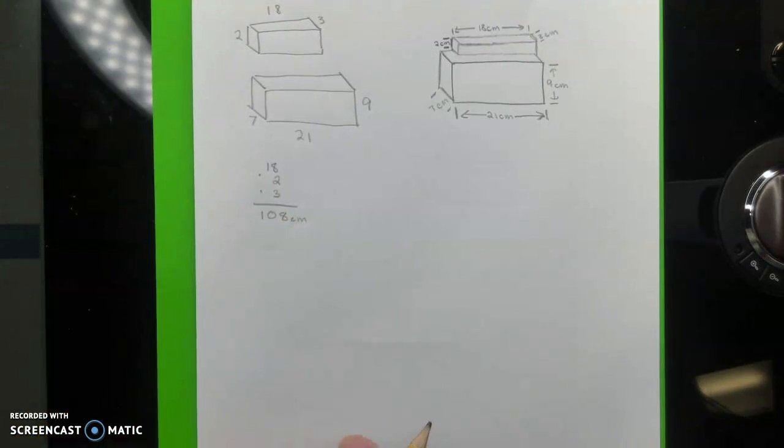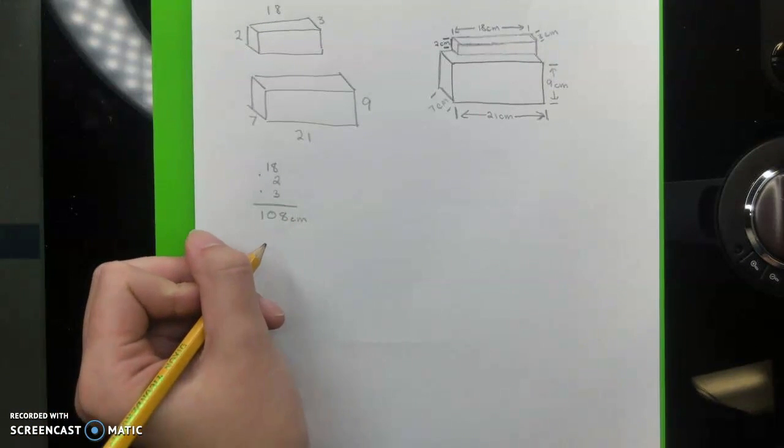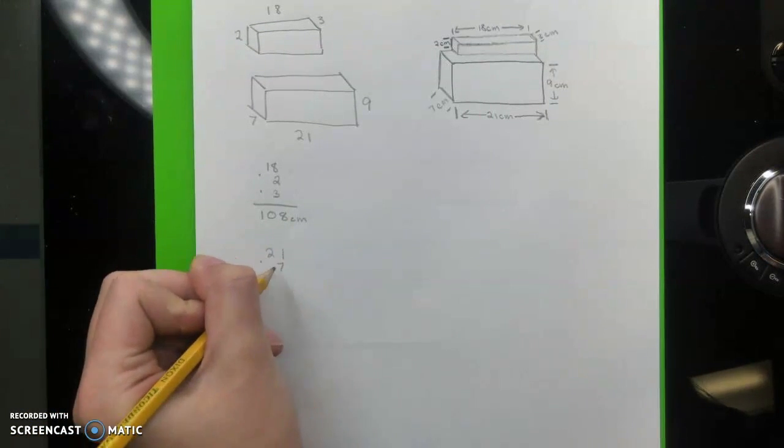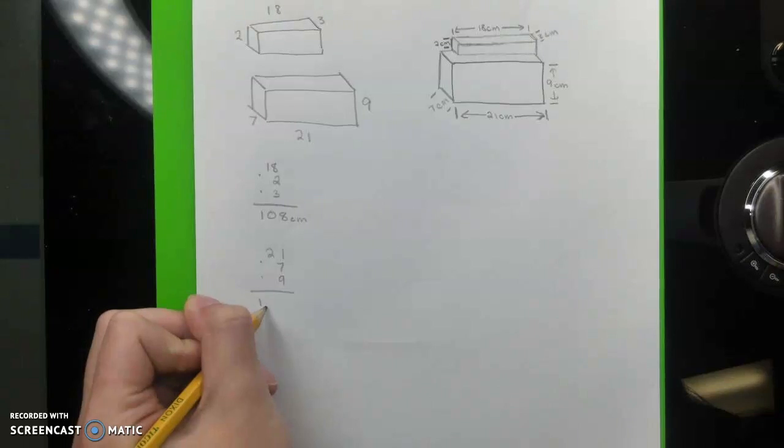Okay, now you're going to do the same thing for the big box, and you're going to multiply 7, 21, and 9, which equals 1,323.